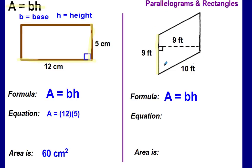Now let's look for the height. If we used the 10 feet slanted side, that's like standing crooked at the doctor's office — the height has to be perpendicular to the base and make a right angle. So the perpendicular side is your height. Our equation is area equals 9 times 9. The area of this parallelogram is 81 feet squared.